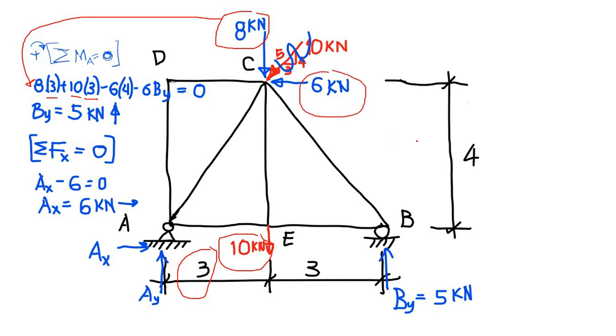This component here, the 6 kilonewton force acts counterclockwise, that is why we have here a sign negative. So this is negative 6 times 4. And the distance from resultant of BY from point A is 6. We have 3 plus 3 equals to 6, so that is why we have 6 times BY equal to 0.